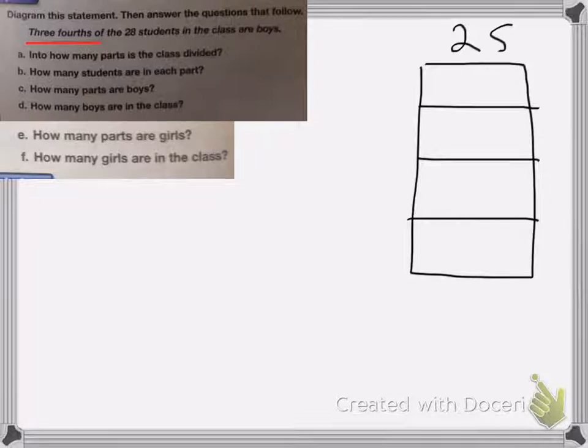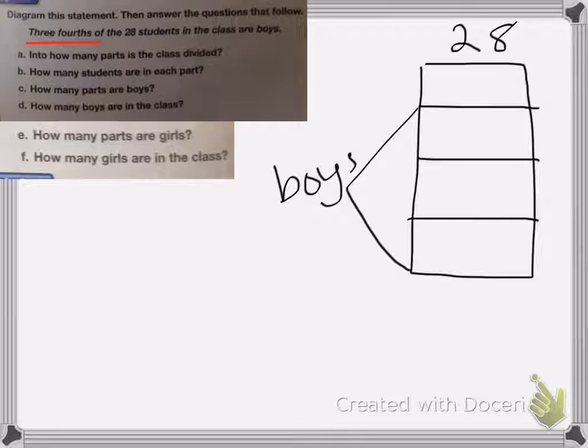And I know that there's 28 students total, and that three-fourths of them are boys, okay? So I need to figure out how many goes into each box. Well, if I have 28 total, 28 divided by four is seven. So seven students go into each of my boxes.